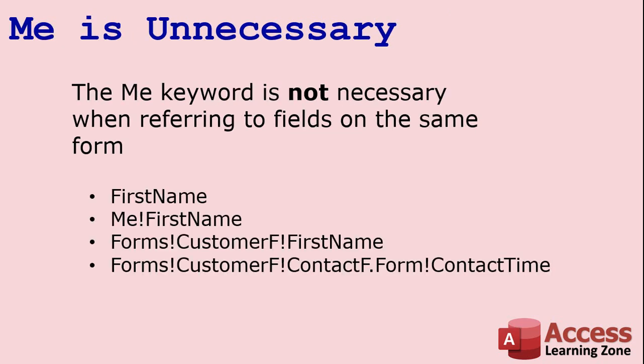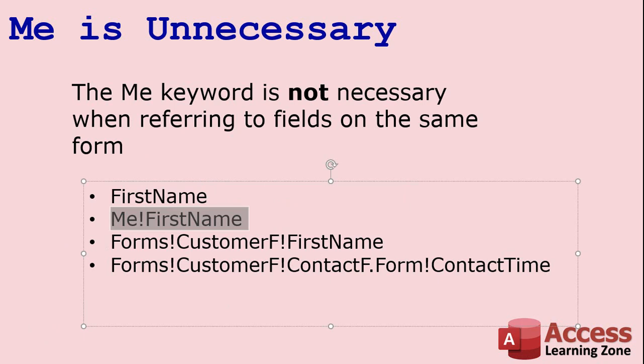Another side note: "Me" is completely unnecessary when working with the current form. I see people posting code online — you don't need to reference Me if you're just working with the current form. Leave it off completely unless you're referencing a property like me.Caption or the width property. Just say FirstName — that's all you need. You don't need me.FirstName or me!FirstName — you don't need Me at all unless you want a property.